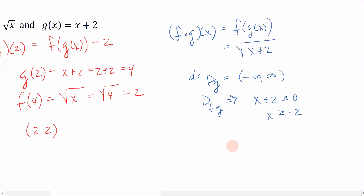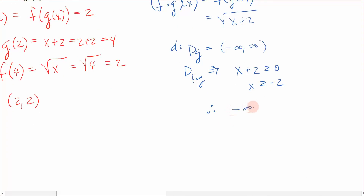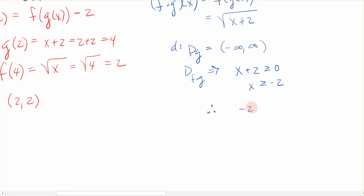We try to now combine the two domains together. All real numbers, combined with the restriction that x is greater than or equal to negative 2, leaves just this restriction. So the domain is negative 2 to infinity — x is greater than or equal to negative 2. And that's the domain of my composed function.